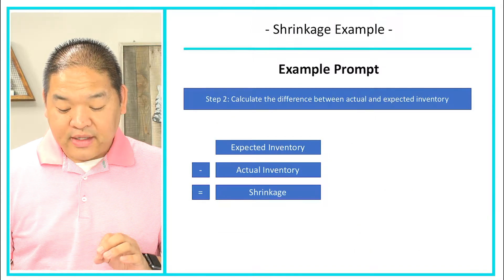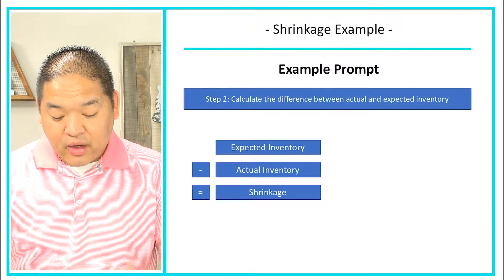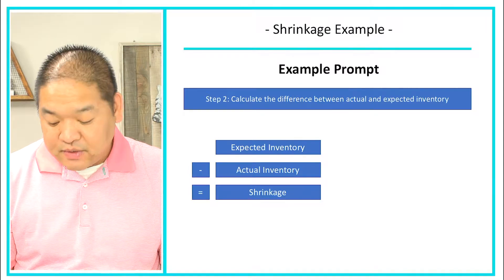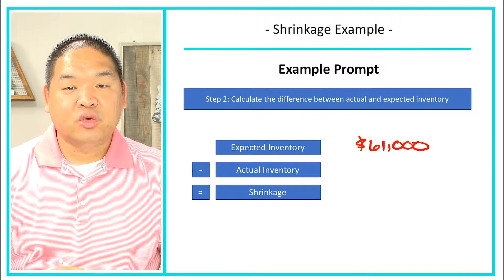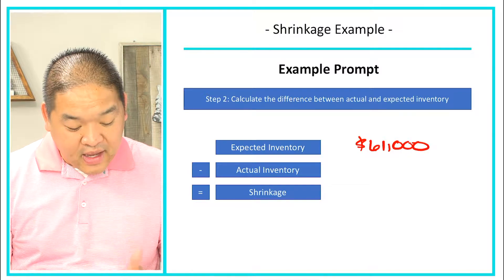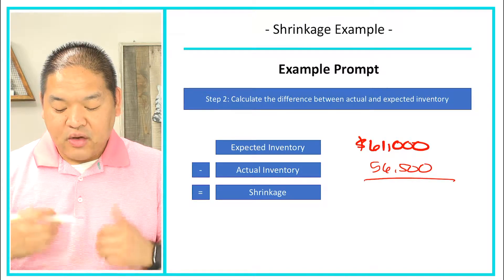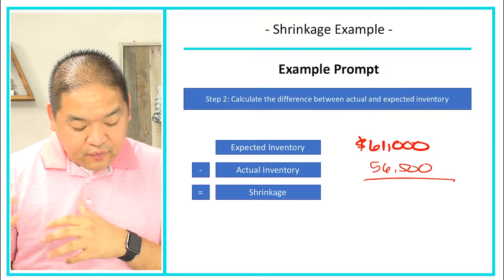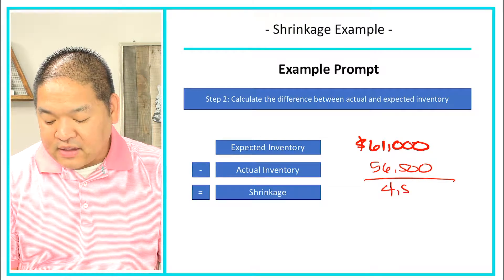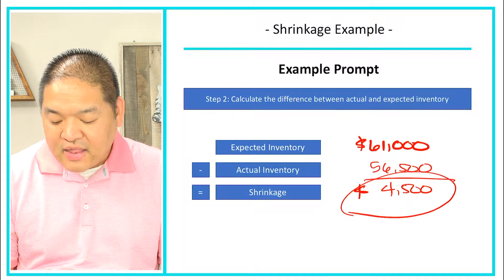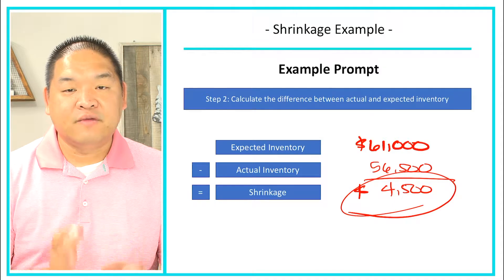Step two: calculate the difference between actual and expected inventory. We expect there to be $61,000 of inventory. However, the inventory accounting firm only counted $56,500. Subtracting the actual from the expected — $61,000 minus $56,500 — gives us $4,500. That $4,500 is our shrinkage: we are missing $4,500 worth of inventory from our store.